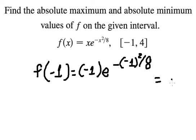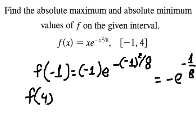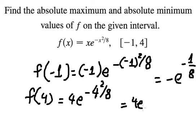So we have negative e to the power of negative one over eight. Now we do similar for number four, so we have four e to the power of negative two.